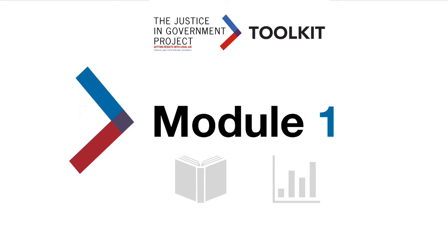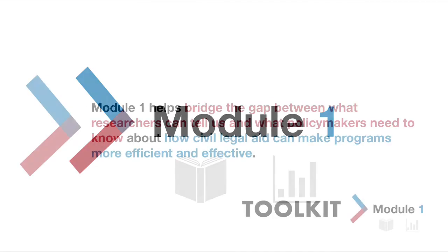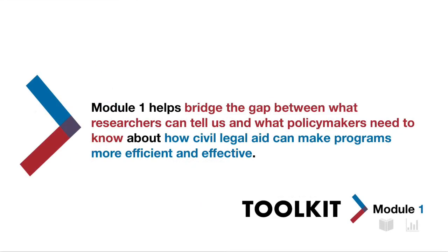Welcome to Module 1 of the Justice and Government Project Toolkit. Module 1 helps bridge the gap between what researchers can tell us and what policymakers need to know about how civil legal aid can make programs more efficient and effective.